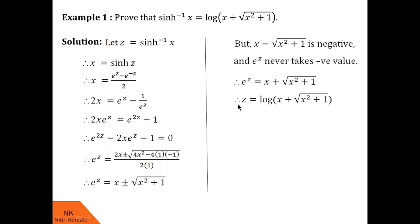Therefore, z = log(x + √(x² + 1)). Since z = sinh⁻¹(x), we finally say that sinh⁻¹(x) = log(x + √(x² + 1)). Hence, this statement is proved.